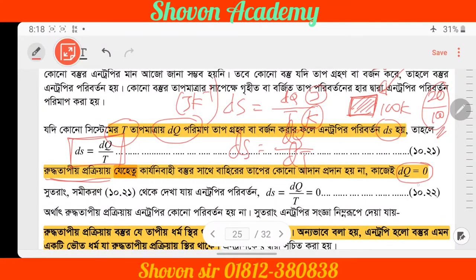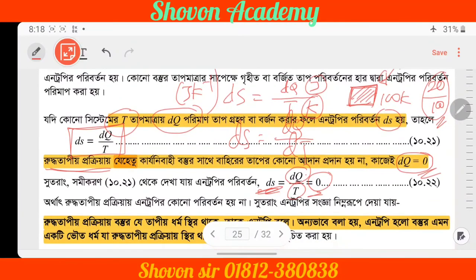This is derived from dq by T. The entropy formula dS = dq/T is integrated. The threshold is evaluated between state 1 and state 2.